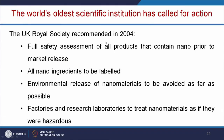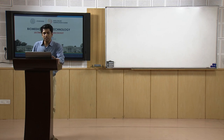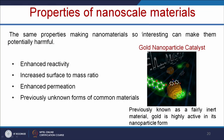The UK Royal Society recommended in 2004 some rules for nano safety: a full safety assessment of all products containing nano prior to market release, all nano ingredients to be labeled, environmental release of nanomaterials to be avoided as far as possible, and factories and research laboratories to treat nanomaterials as if they were hazardous. The same properties making nanomaterials so interesting — enhanced reactivity, increased surface area-to-mass ratio, enhanced permeation, and previously unknown forms of common materials — can make them potentially harmful.